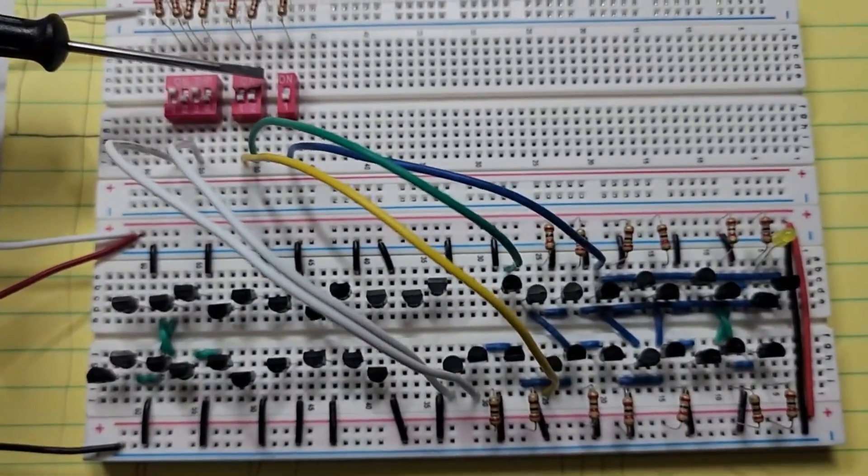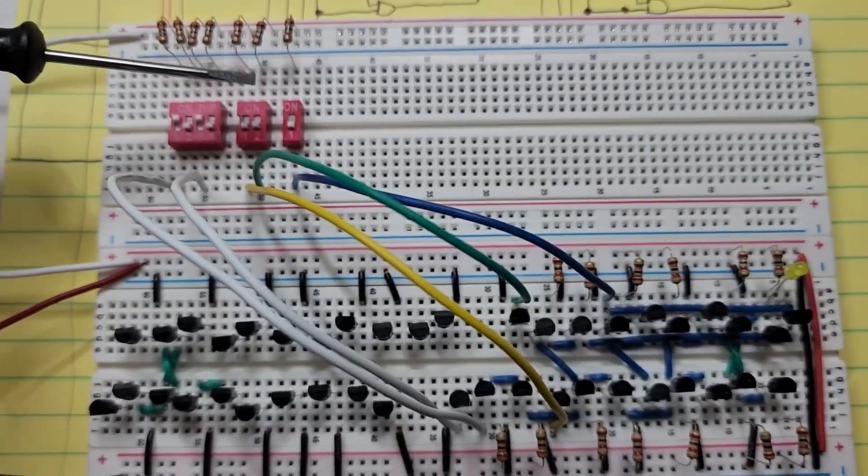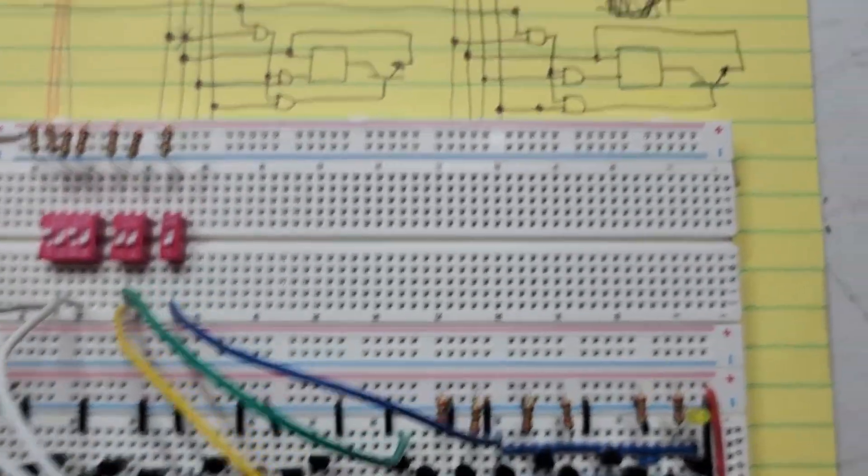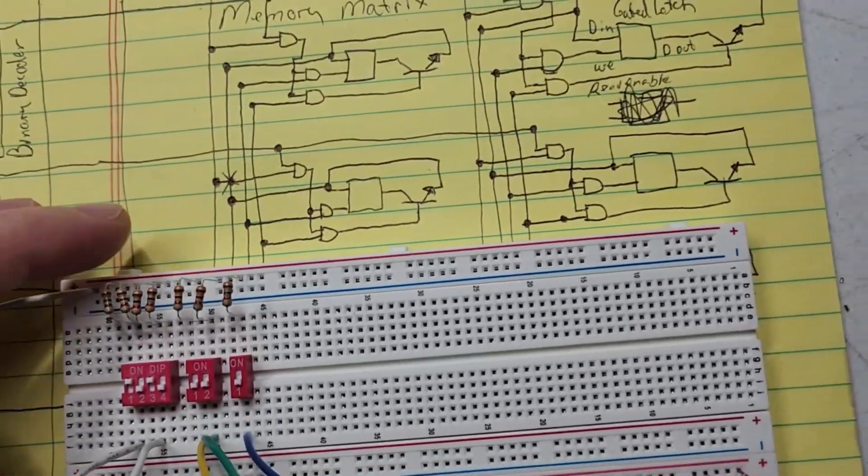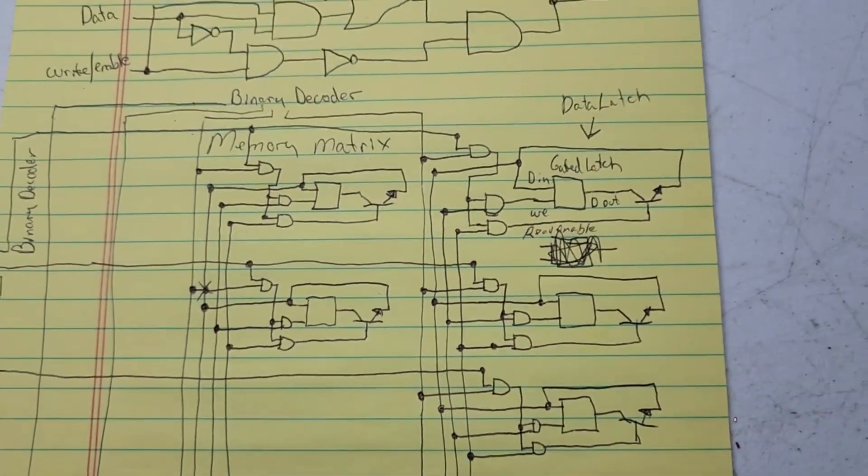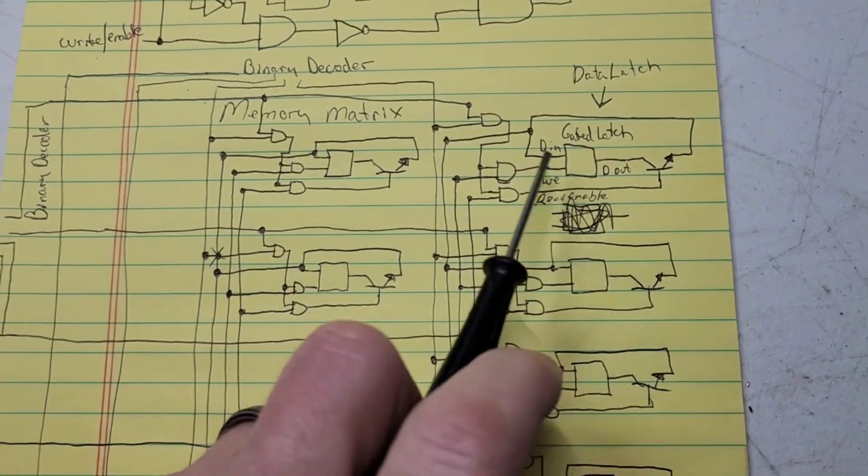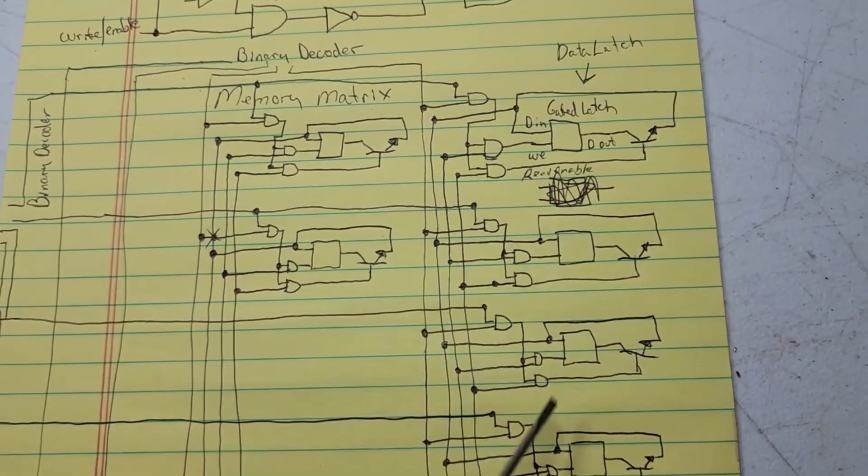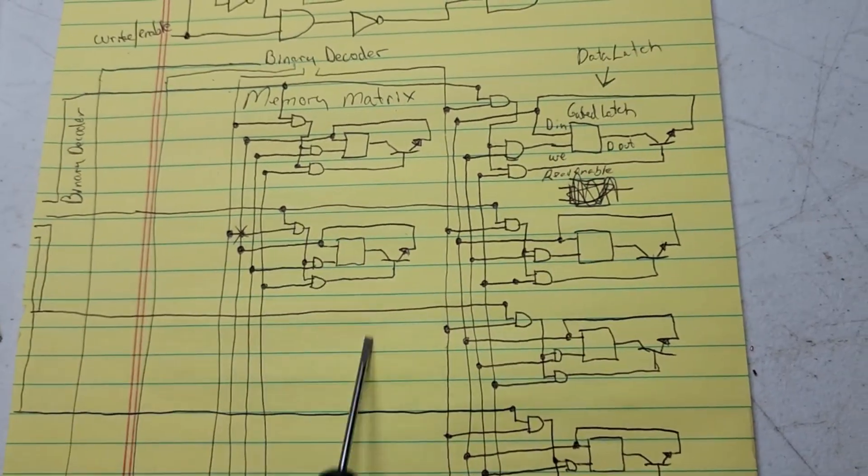There's the write enable. I guess I'll have to show you what I got going here first. So after this first bit of memory, I'm going to build 16. I'm going to build like four rows, four columns, four rows.